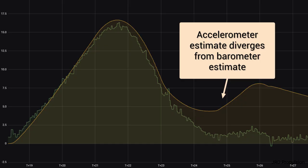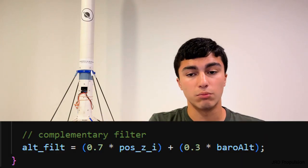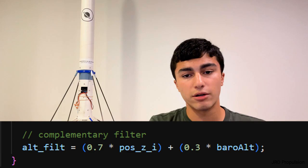This however only worked well in the short term, as the position estimate quickly degraded over just a few seconds. To counter this, I added a simple complementary filter that fuses the barometer and accelerometer data, giving a slightly better estimate for altitude.